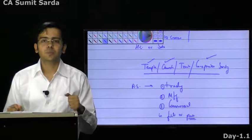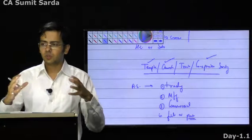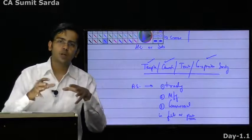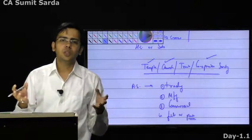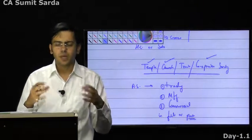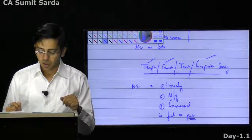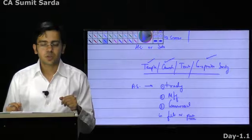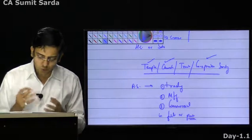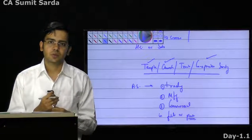Have you heard about Amul? Amul brought Gujarat's various milk producers together into one cooperative society — why compete with each other? Let us come together and sell the milk together as a bigger foundation. There is again a commercial activity, so accounting standards will be applicable. Accounting standard applicability will be there for all such cases.